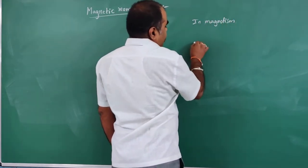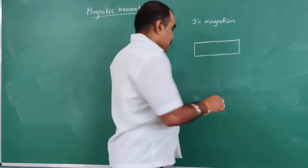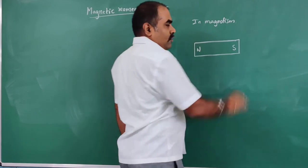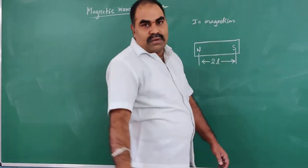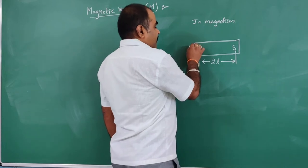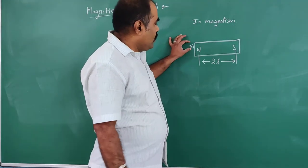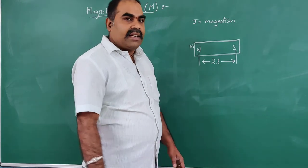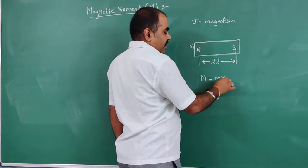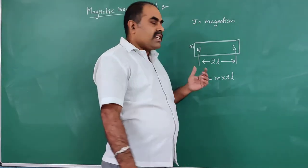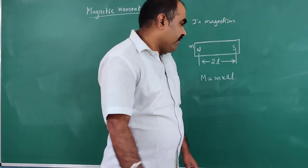Consider a bar magnet. In the bar magnet, two poles are present — one is the north pole and the other is the south pole. In between these two poles some length is present. Each pole has some pole strength, represented by small m. The magnetic moment is represented as small m multiplied by 2l — the product of pole strength and the length of the bar magnet is called magnetic moment.